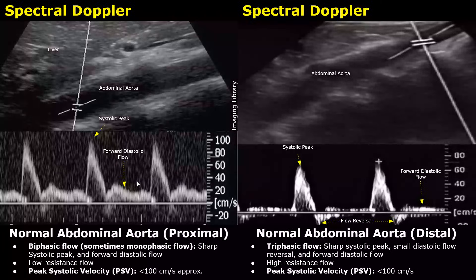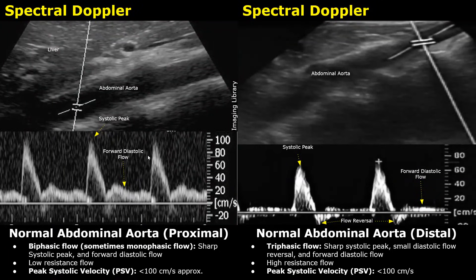Here are the spectral Doppler findings of the abdominal aorta. The proximal aorta is just below the diaphragm and behind the liver. On spectral Doppler, the proximal aorta will usually have a biphasic flow. In some patients, it may show a monophasic flow.